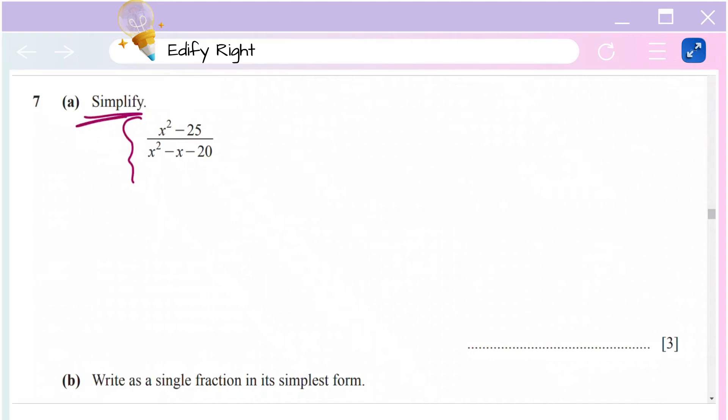Here we have simplified this algebraic fraction. Let us talk about the numerator first. The numerator here is x² - 25, which is in the form of a² - b². The way you factorize a² - b² is (a + b)(a - b).